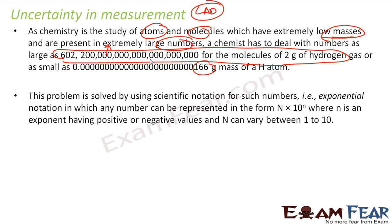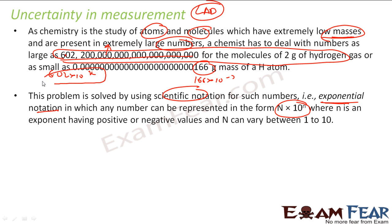To solve this problem, the scientific community came up with something called exponential notation. For example, a large number can be represented as 6.02 × 10 to the power of some value. The general formula is n × 10^n. A small number can also be written as 1.66 × 10 to the power of minus some value, depending on the number of zeros. It is easy to write 6.02 × 10^x rather than writing all those zeros. So they came up with scientific notation where n can vary from 1 to 10, negative or positive — that means from minus 10 to plus 10.